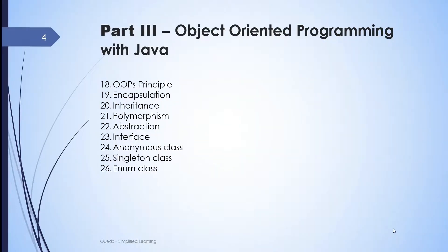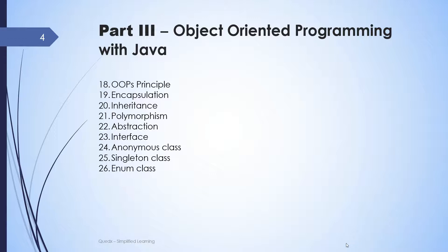In part 3, we will cover the core concepts of object-oriented programming, popularly called OOP. We will learn about encapsulation, inheritance, polymorphism, and abstraction, and see how we can apply these in Java. We will introduce interfaces, anonymous classes, singleton, and enum classes.